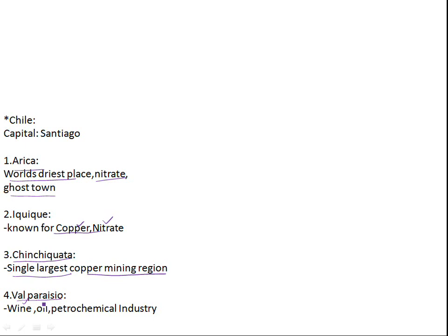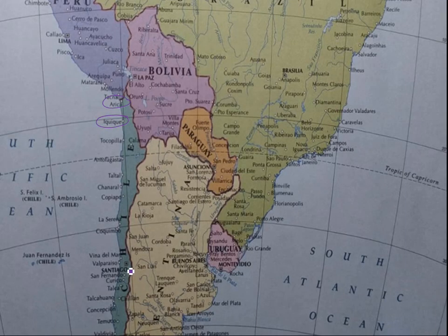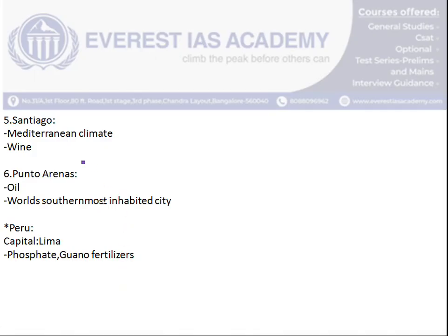The next city is Valparaíso. It is major in wine production due to the Mediterranean climate. There is more production of citrus fruits, which leads to more production of grapes and in turn more production of wine. It is also major in oil and petrochemical industries. We'll see it on the map — that is Valparaíso and that is Santiago.